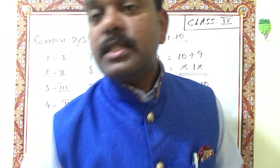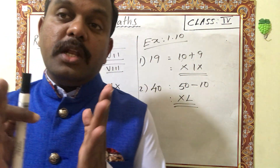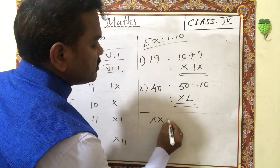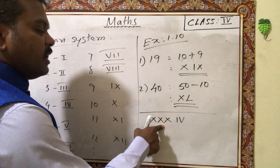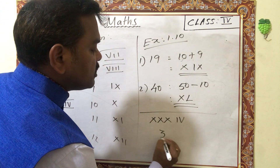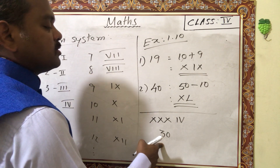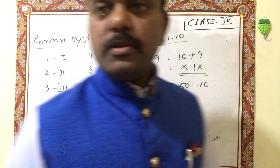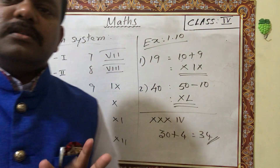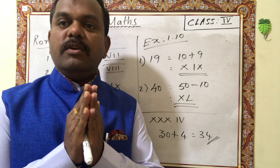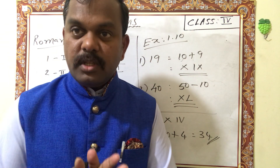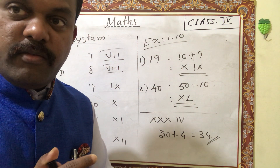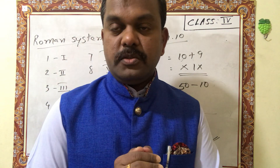If Roman numerals like XXXIV are given, can you find the number? XXX is 3 times X, which is 10 plus 10 plus 10 equals 30. Then IV is 4. So XXXIV equals 34. These 7 videos have covered our first lesson. I hope you understand everything. If you have any doubt, when we conduct our Zoom interaction session, ask your questions and I will rectify your doubts. Thank you all.